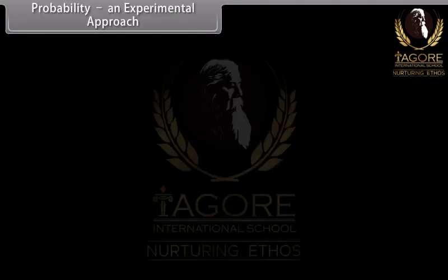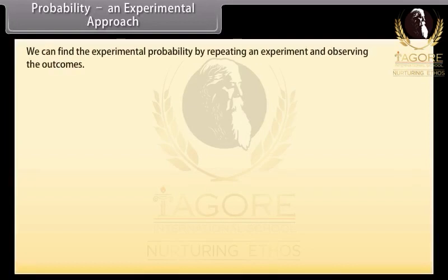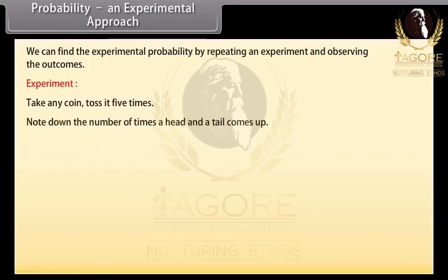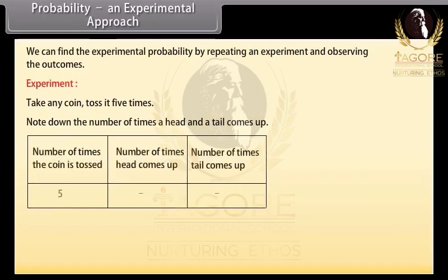Probability: An experimental approach. We can find the experimental probability by repeating an experiment and observing the outcomes. Let's do an experiment. Take any coin, toss it five times.